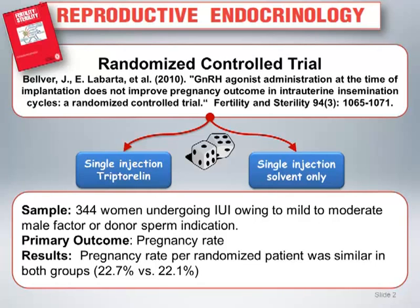The results of the study showed that the pregnancy rate per randomized patient was similar in both groups, being 22.7% in the intervention group compared to 22.1% in the placebo group.